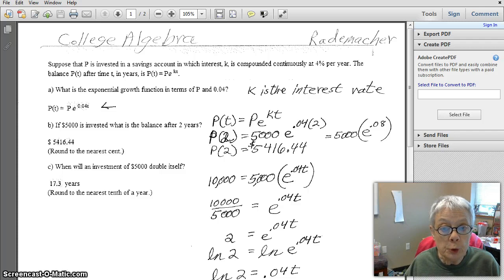If P(T) equals P times e to the kT, then P(2), that is P as a function of 2, is going to be 5,000, that's the principle we're putting in, 5,000 times e to the .04 times 2, which of course will be .08. So this is what we end up with, and when you put this in the calculator, you get $5,416.44. That is, what you multiply is 5,000 times e to the .08.